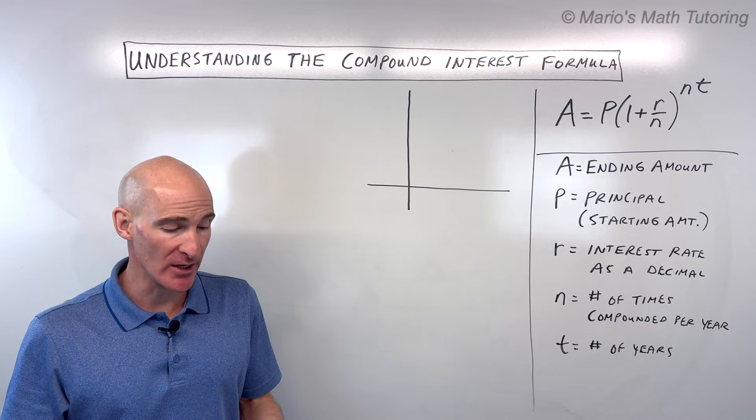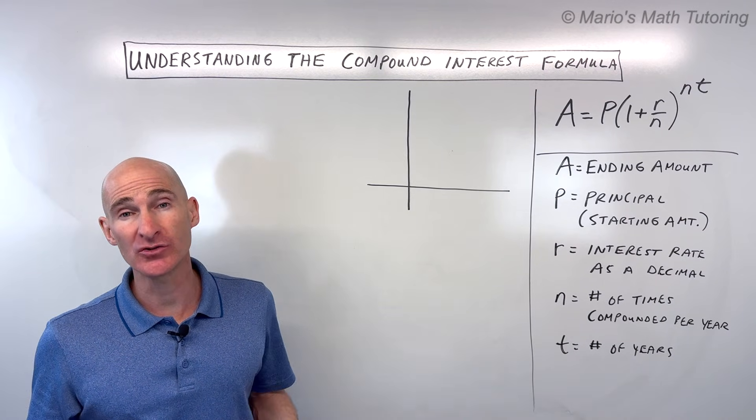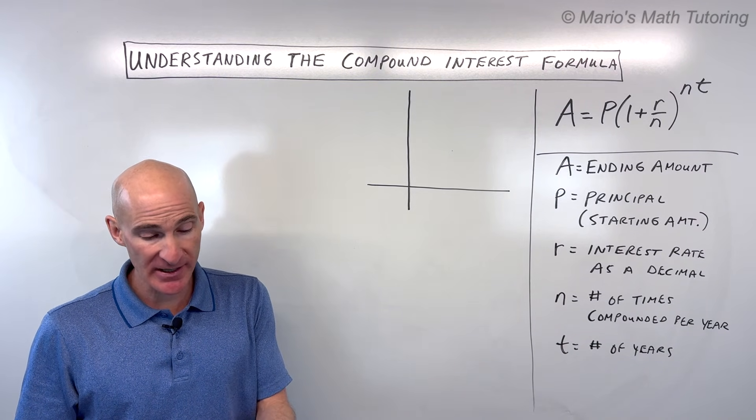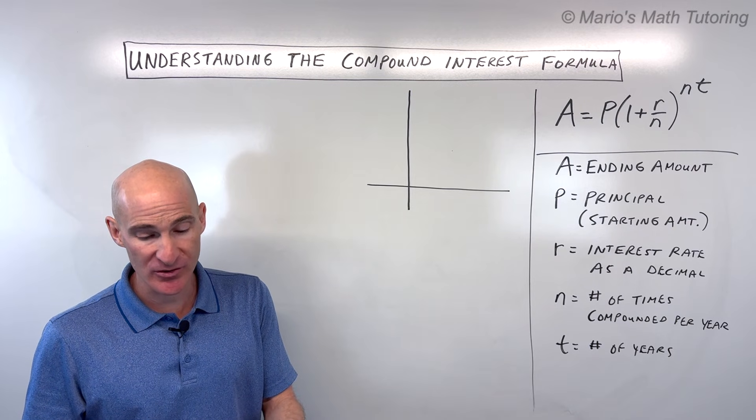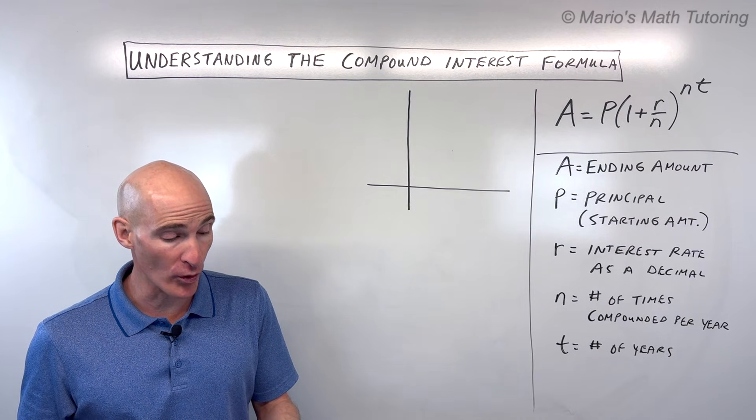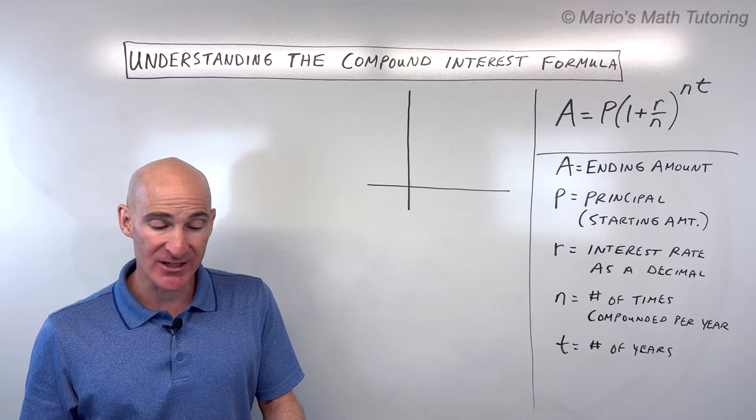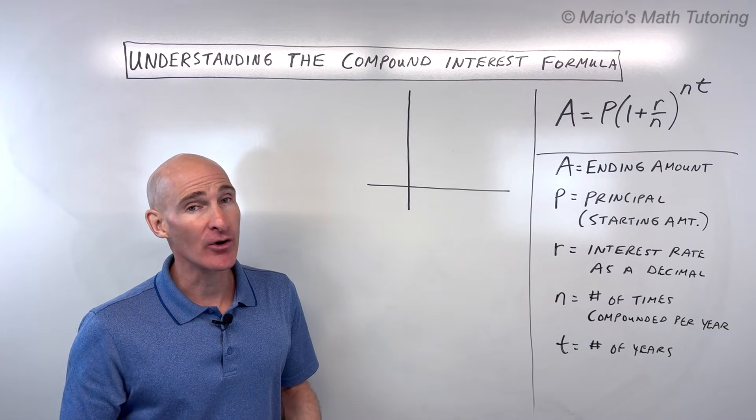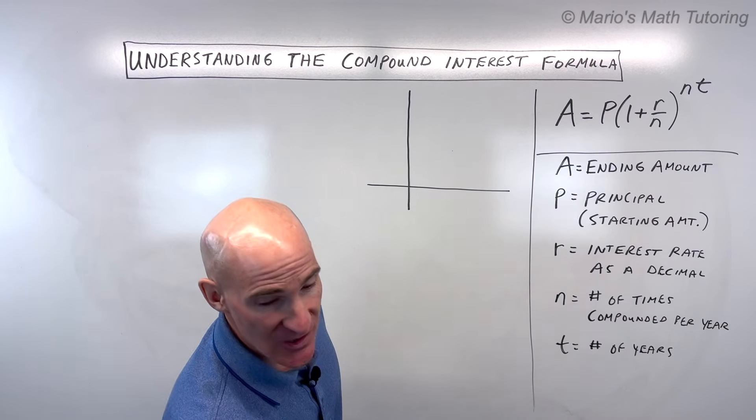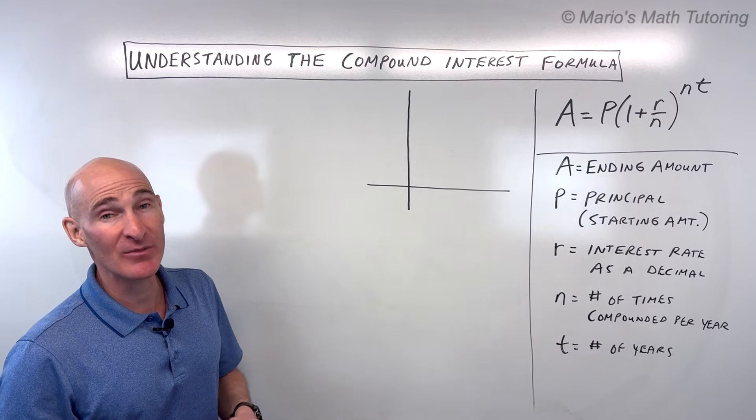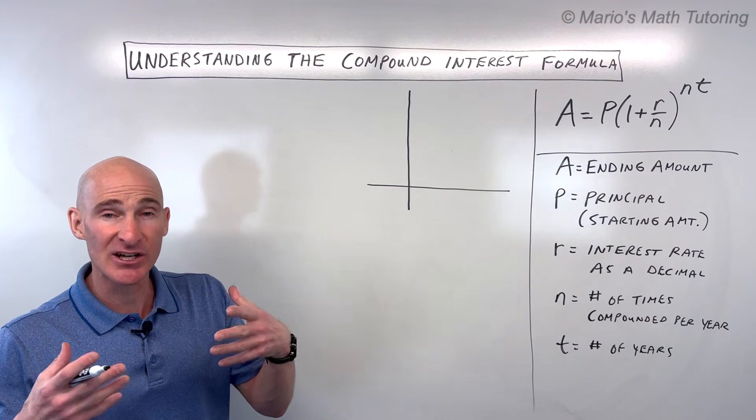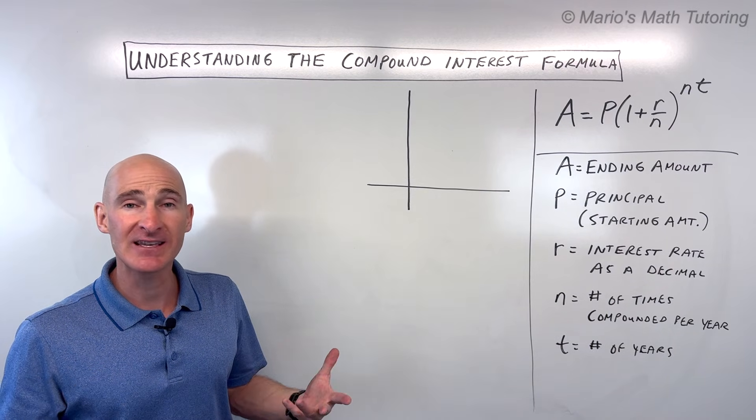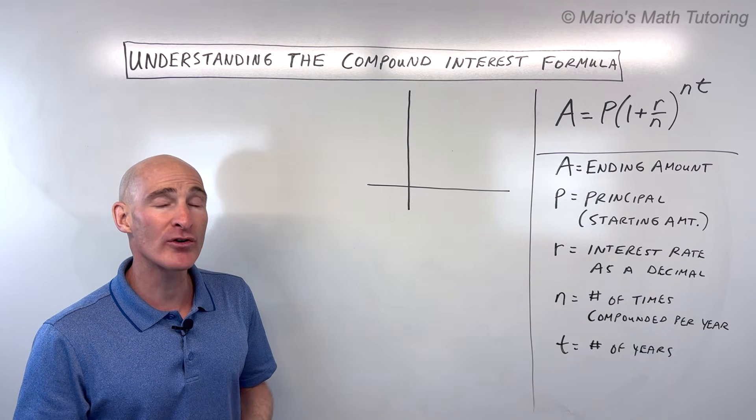The first thing I want to read to you is a famous quote that's been attributed to Albert Einstein. And supposedly Albert Einstein said that compound interest is the eighth wonder of the world. He who understands it earns it. He who doesn't pays it. So kind of a profound quote. We don't know if he actually said it or not, but the point is that it's such a powerful concept that he refers to it as the eighth wonder of the world.